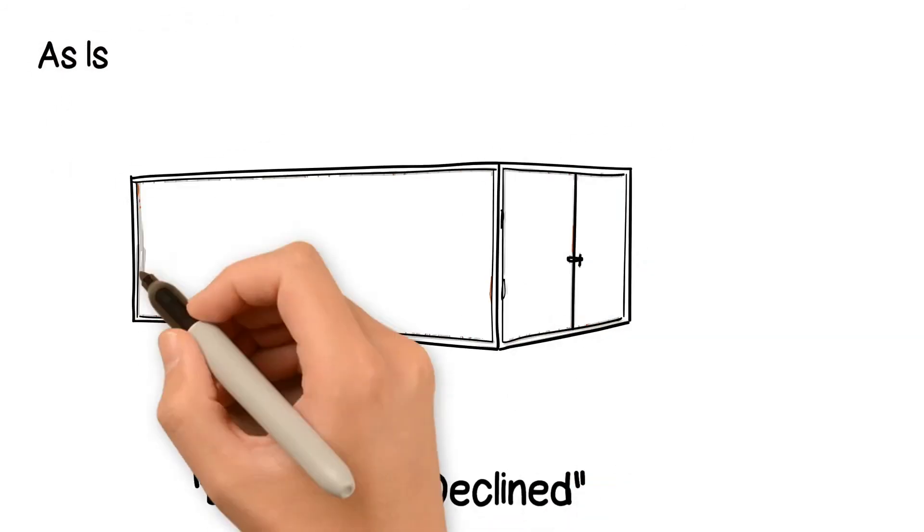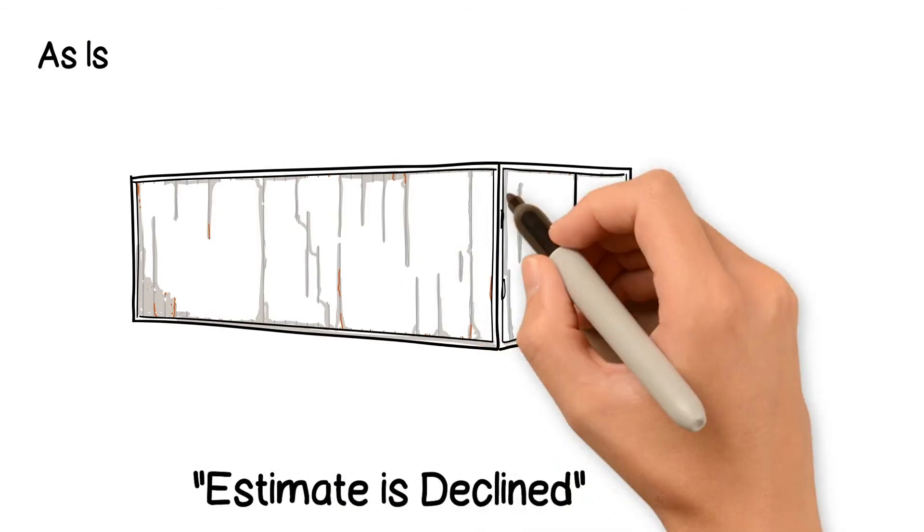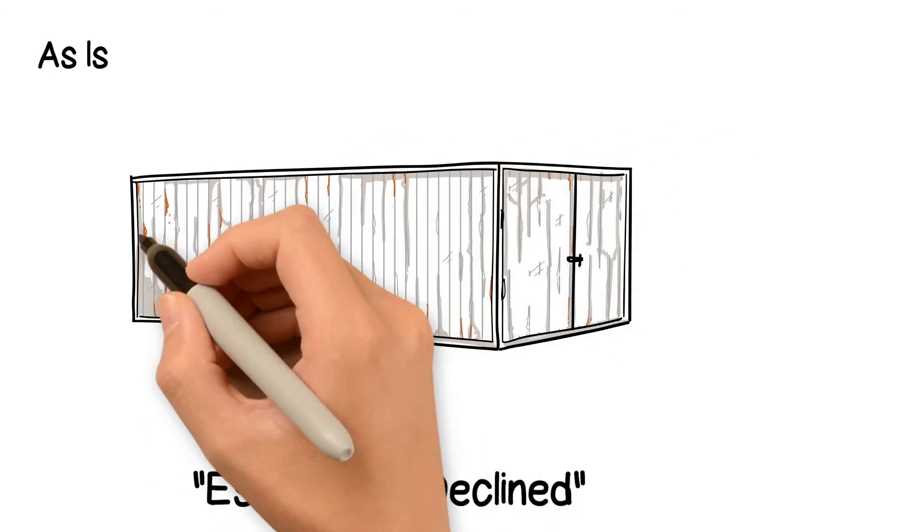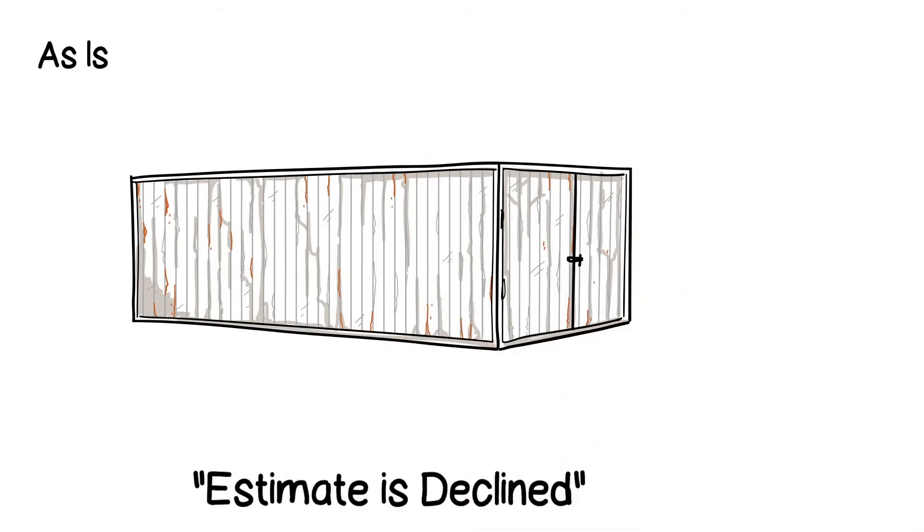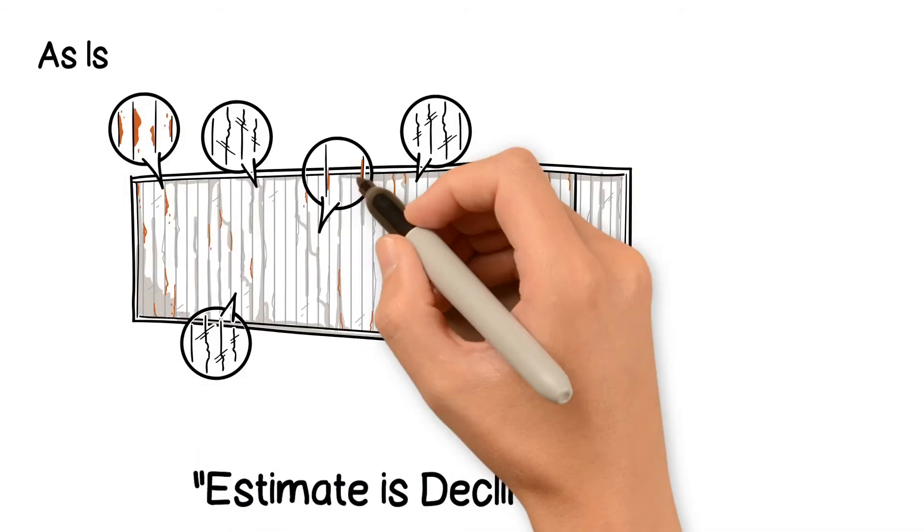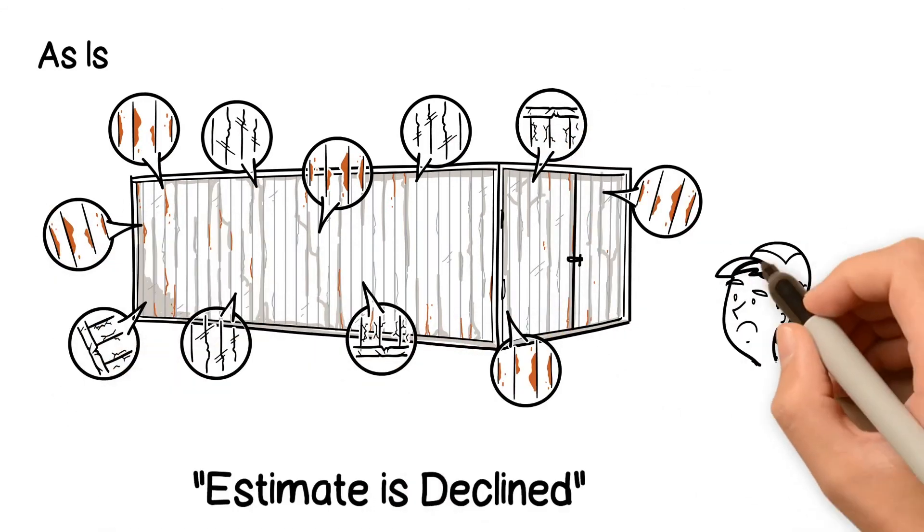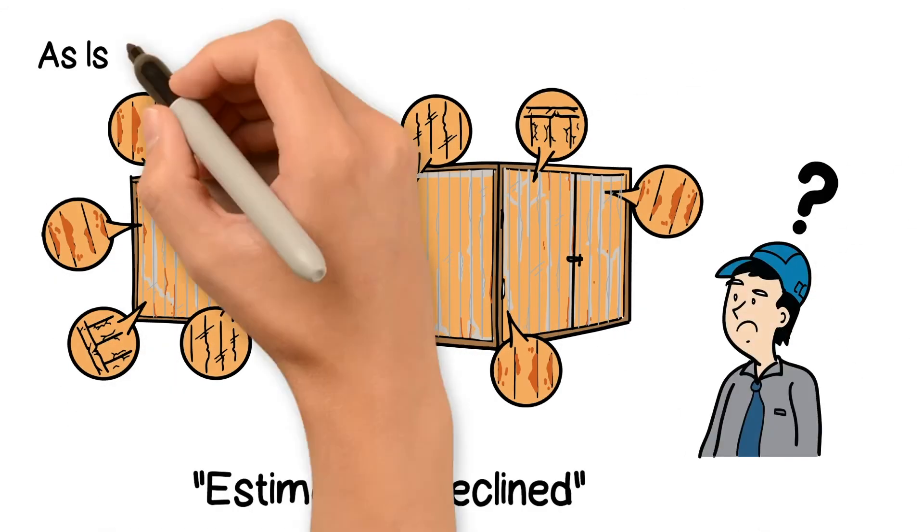If the estimate is declined, the unit is classified as is. It can be declined for various reasons, but usually it's related to some repair cost formula. More often than not, however, the unit is just sold with heavy signs of use and aging. The units are priced at a discount but have no warranties, typically 14 to 20 years old.